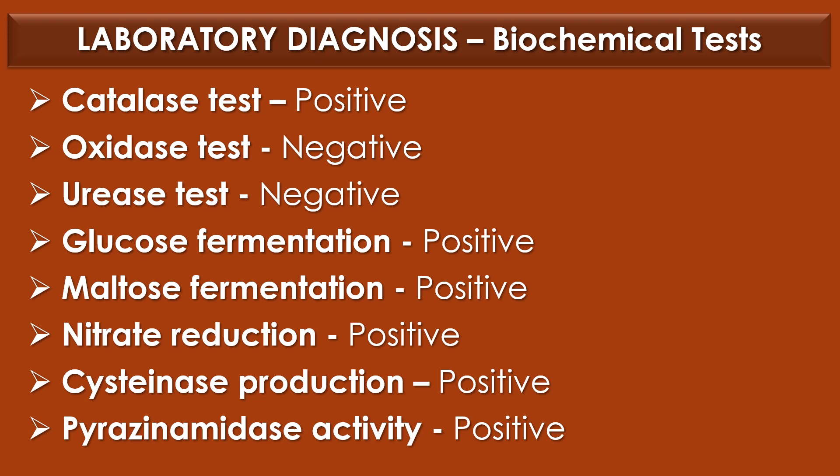Biochemical tests for Corynebacterium diphtheriae identification: Catalase test — positive. Esterase test — negative. Urease test — negative. Glucose fermentation — positive. Maltose fermentation — positive. Nitrate reduction — positive. Cysteinase production — positive. Pyrazinamidase activity — positive.